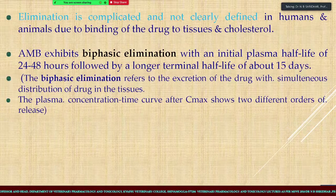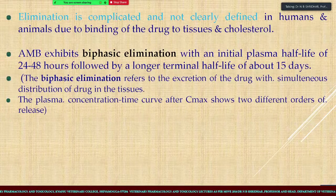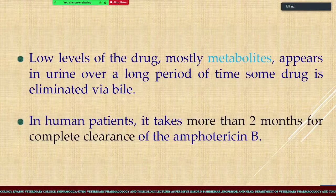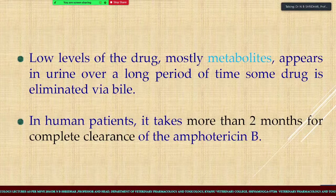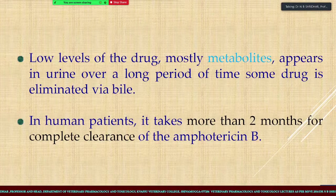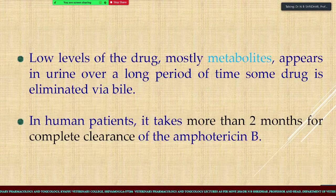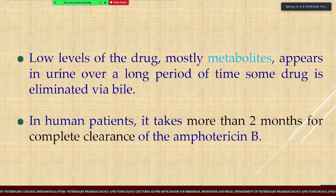Once absorbed, it is distributed to different tissues and then slowly released into the circulation. The elimination is complicated in humans and animals due to binding of the drug to tissue and cholesterol. Amphotericin B exhibits biphasic elimination with an initial plasma half-life of 24 to 48 hours, followed by a longer terminal half-life of about 15 days.